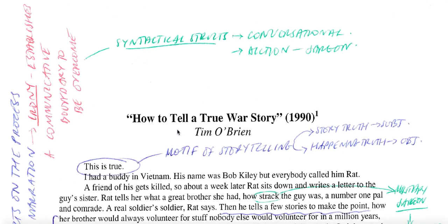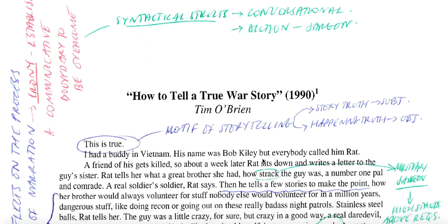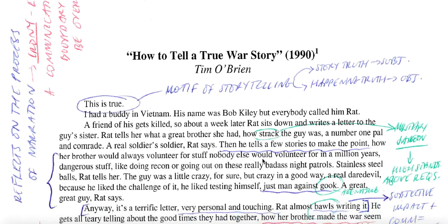The narrative voice adopts the voice of a friend, Rat Kiley, and in doing so becomes the spoken, anecdotal storytelling voice of a Vietnam veteran. The syntactical structures are conversational, and the diction is loaded with military jargon, idioms, and military slang, which deliberately constructs a barrier between the ordinary citizen reader and the experiences being narrated.